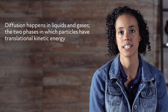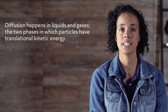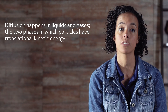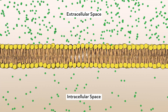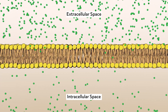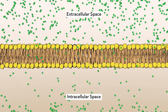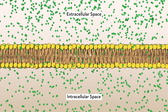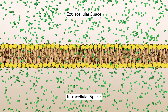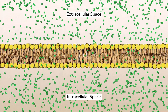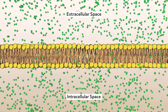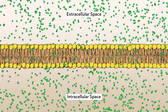Diffusion happens in liquids and gases, the two phases in which particles have translational kinetic energy, and it can also happen across the cellular membrane. If there is a high concentration of a substance outside of the cell, more substance will diffuse into than out of the cell, until the concentrations are equal.